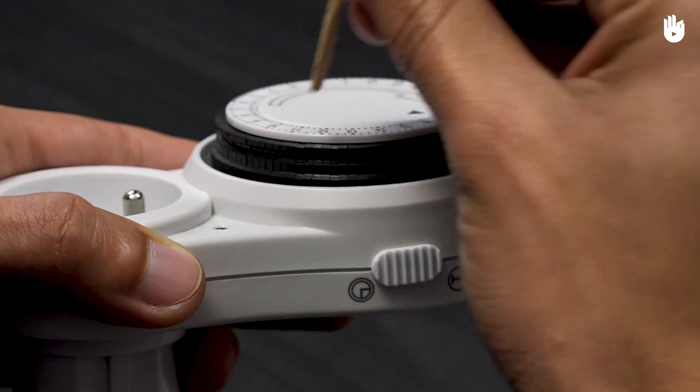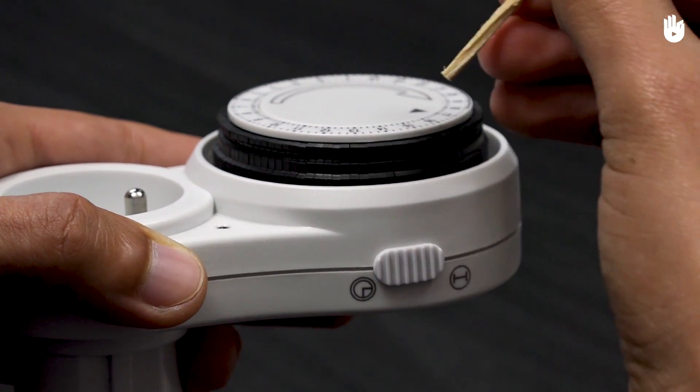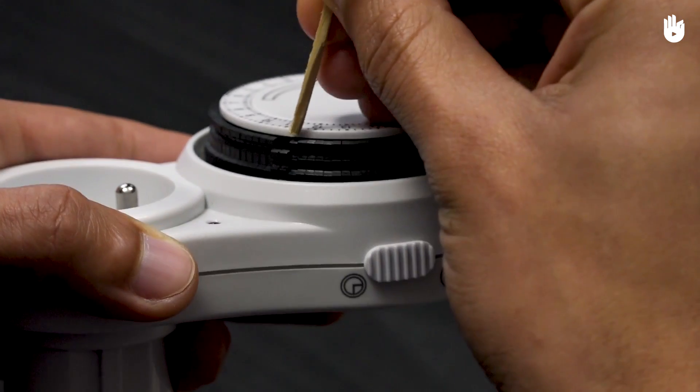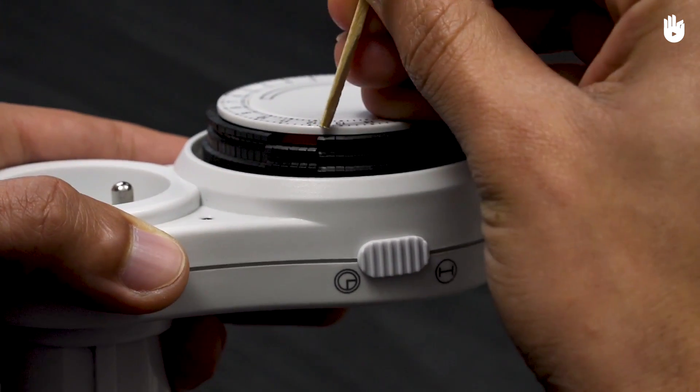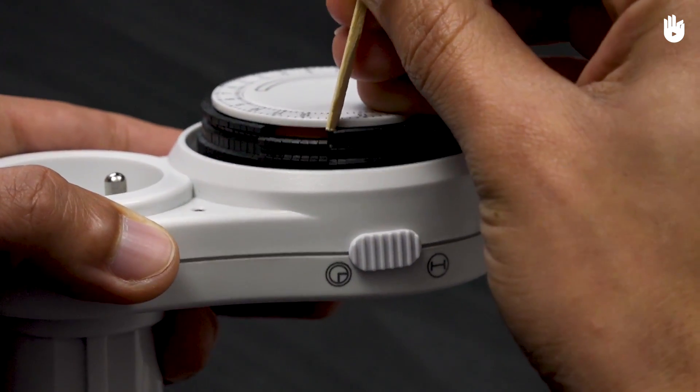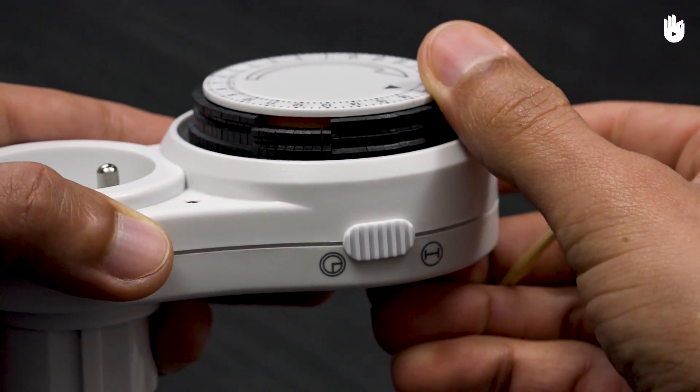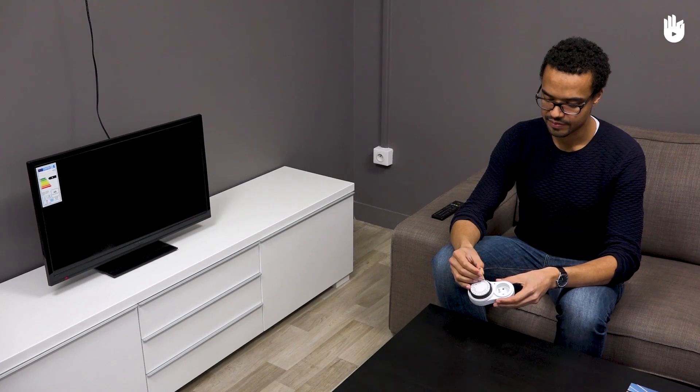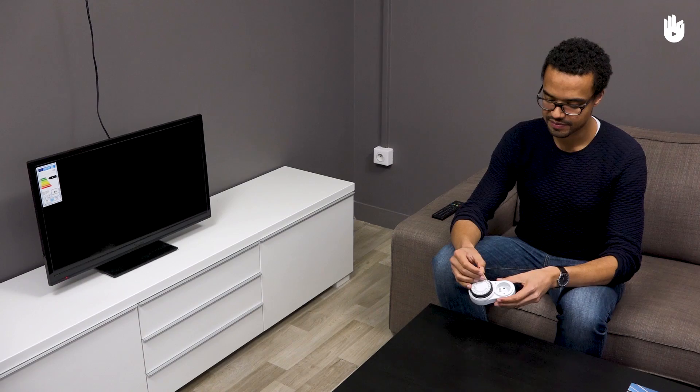If you want the device to be active between 1 and 11 o'clock, use a match or a pen to push in the little black notches between 11 and 1 o'clock. You can activate the timer for multiple time periods within a 24-hour cycle.